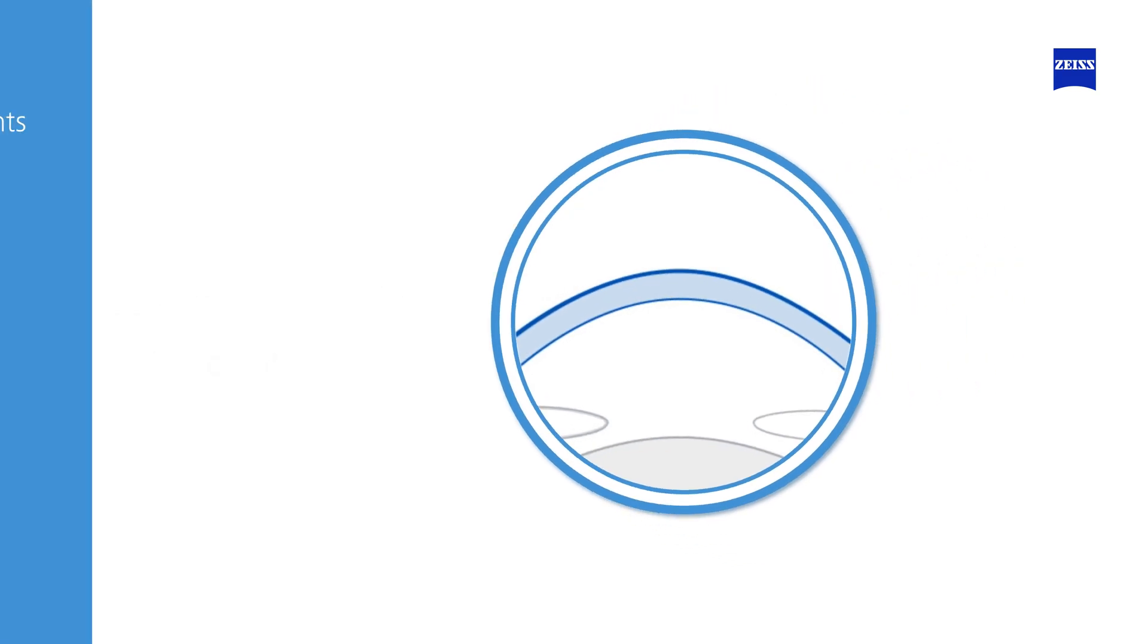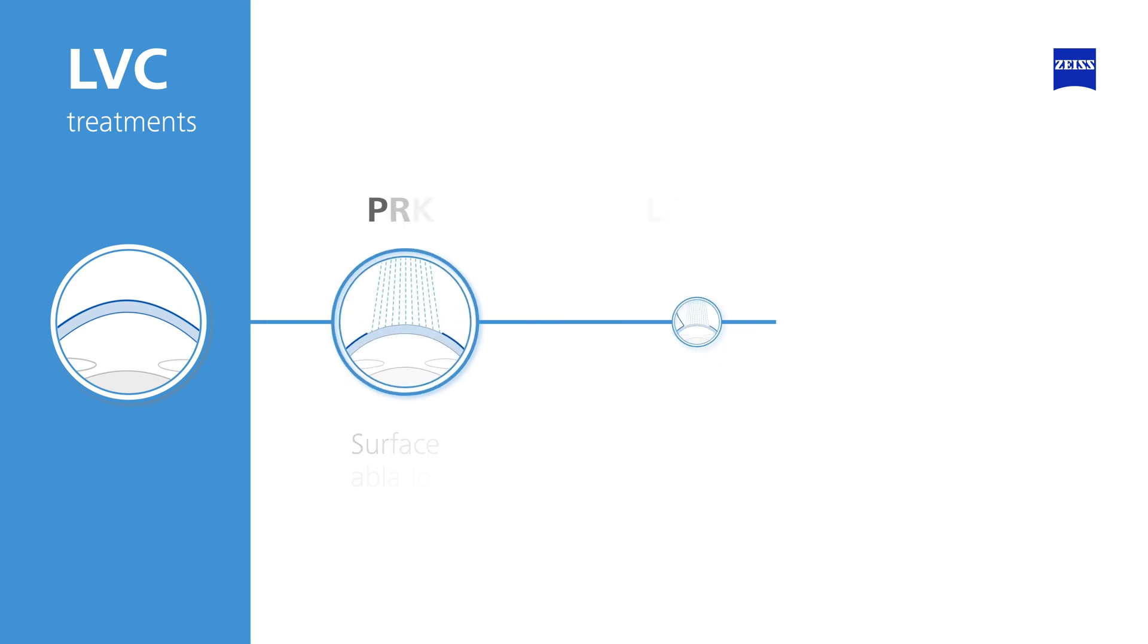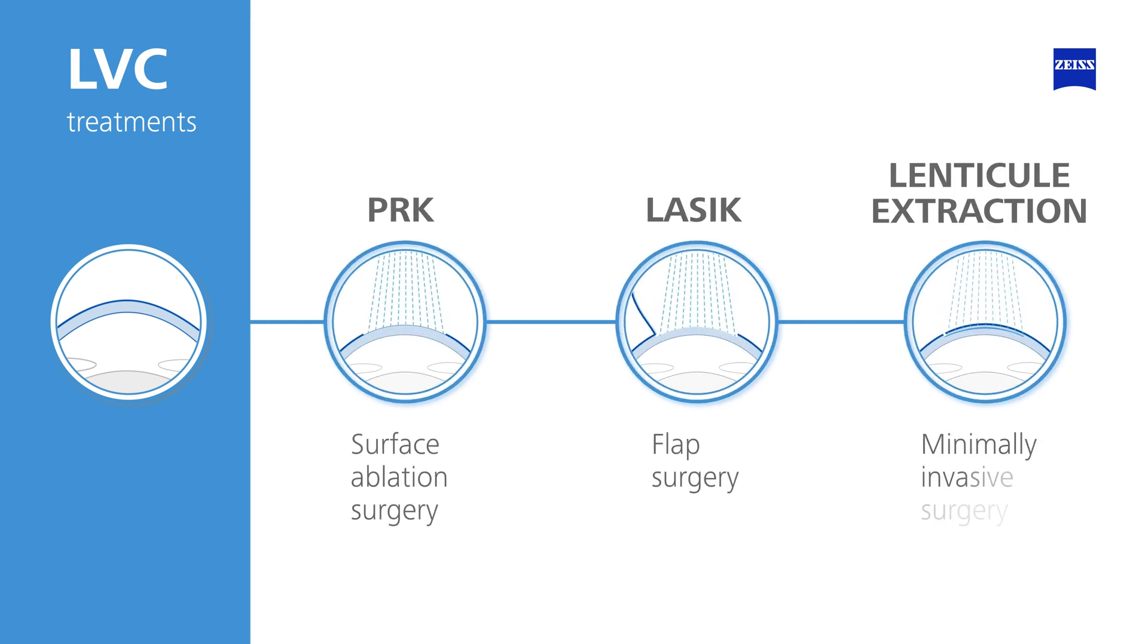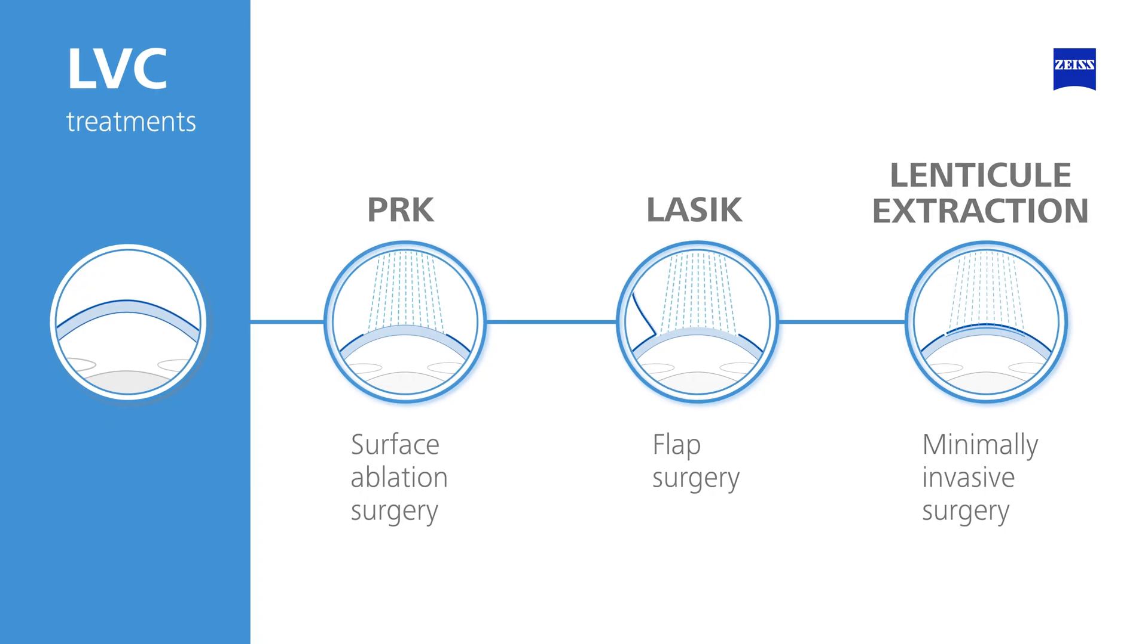There are different types of laser vision correction available today. While they differ in the ways the procedure is performed, each option is designed to improve vision by correcting refractive errors. Your eye doctor can recommend the options that are suitable for your individual needs.